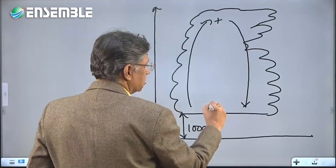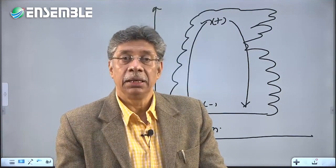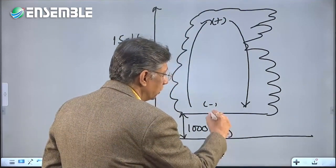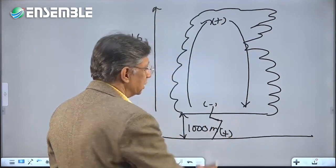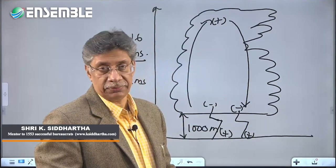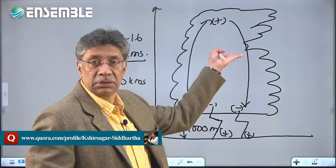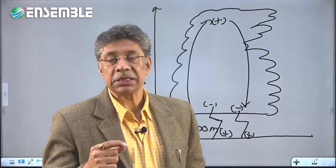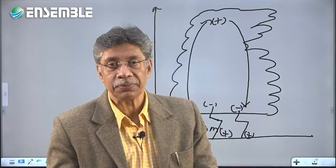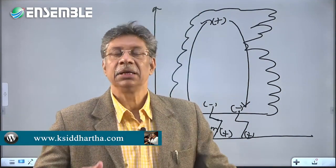The upper region of the cloud becomes positively charged and the base becomes negatively charged. The negatively charged cloud base then induces a positive charge on the portion of the ground underlying the cloud — the ground goes on to become positively charged. Since air is a very good insulator, as a thunderstorm cell forms, electric charges build up and tremendous potential develops for an electric discharge.